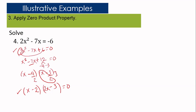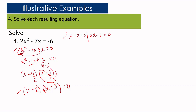Step 3: Apply zero product property. x minus 2 equals 0 and 2x minus 3 equals 0. Step 4: Solve each resulting equation. Using addition property, x₁ equals 2. For 2x equals 3, divide both sides by 2, giving x₂ equals 3 over 2. The solutions are 2 and 3 over 2.